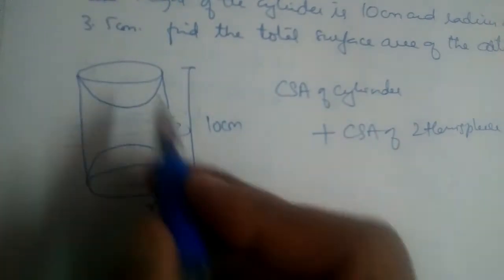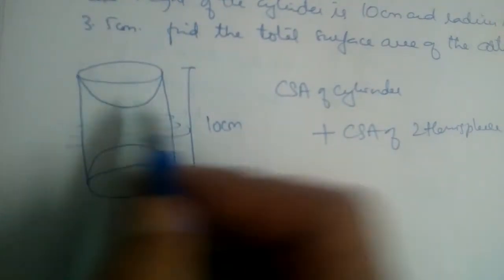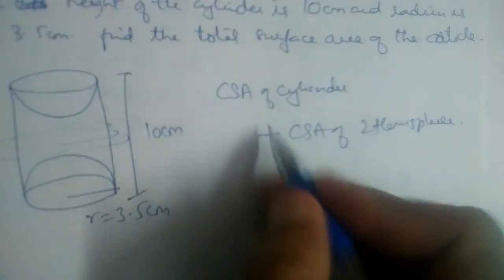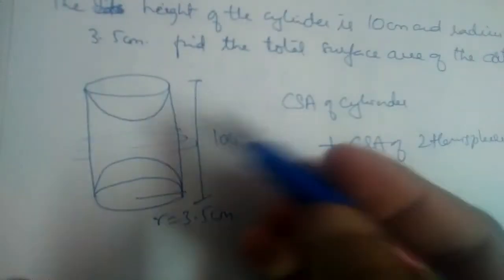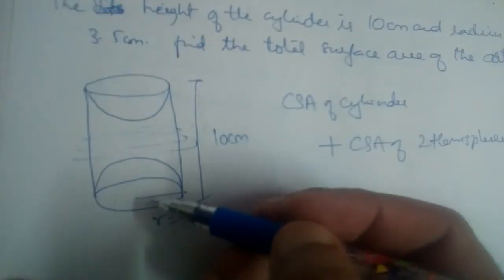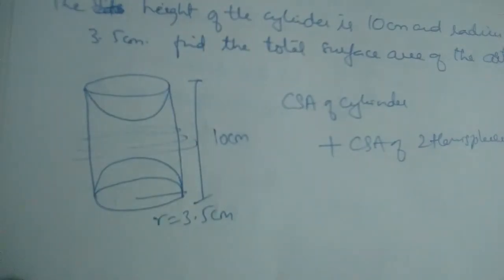So curved surface area of one hemisphere, curved surface area of second hemisphere. Curved surface area of 2 hemispheres we should add, not subtract. If this problem was given in volume, then we would have subtracted.